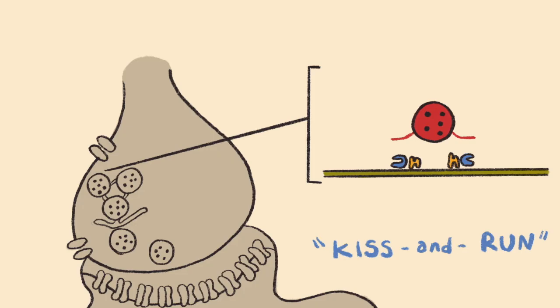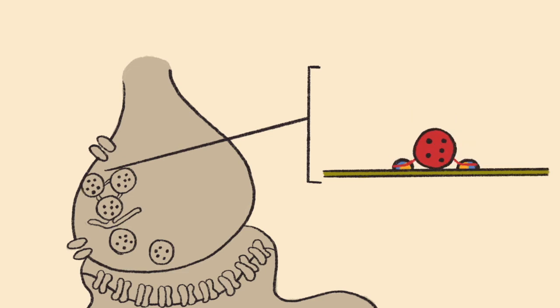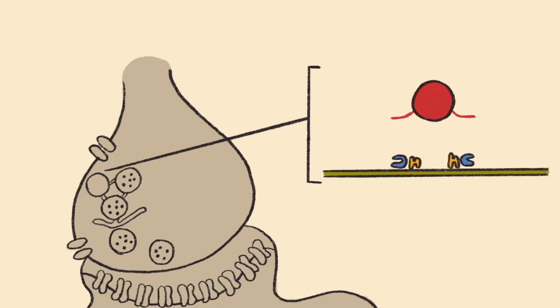Another way to view the formation of the docking complex and release of neurotransmitters is by using the term kiss and run. This type of membrane fusion, termed kiss and run fusion, occurs when a vesicle docks, opens temporarily, releases its contents, and then closes and moves away from the membrane. The vesicle can then be reused after this.